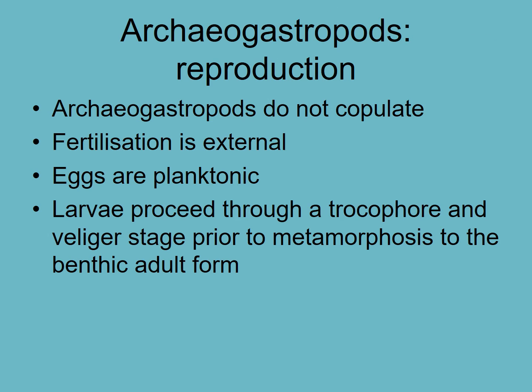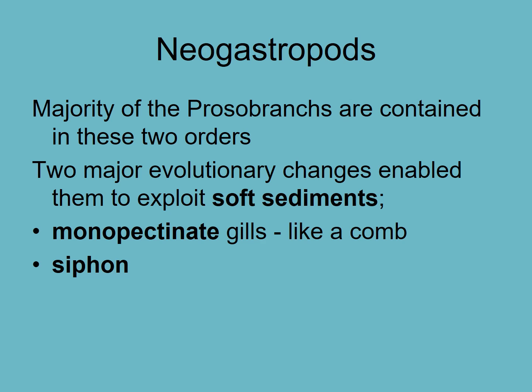Reproduction — they don't copulate. They lay eggs, but they are externally fertilized, and then they settle. So let's go on to the neogastropods, the new gastropods. They have a couple of different things that allow them to exploit soft sediments, which most of the ocean is — probably 95% of the ocean surface is going to be soft, depositional sediment.